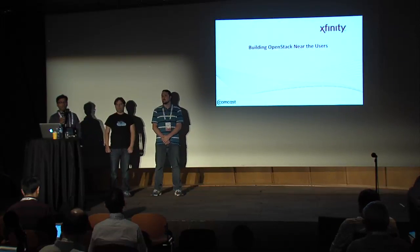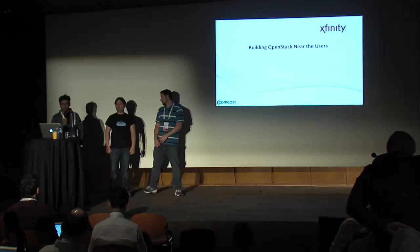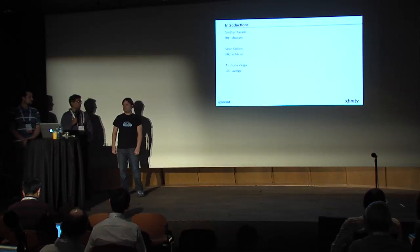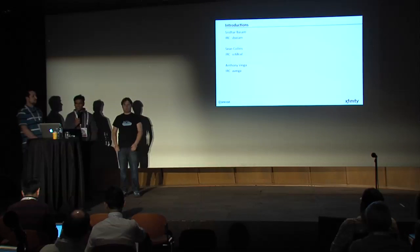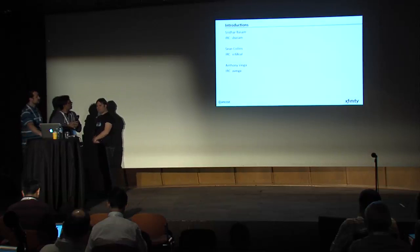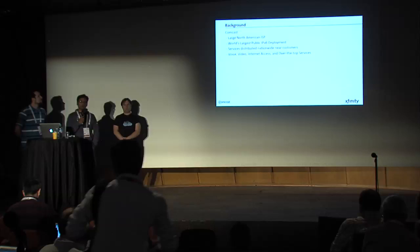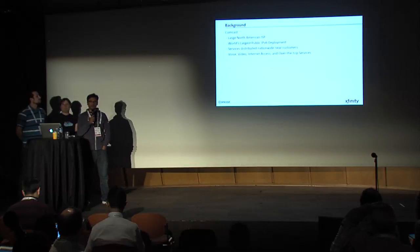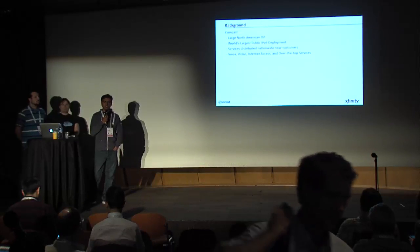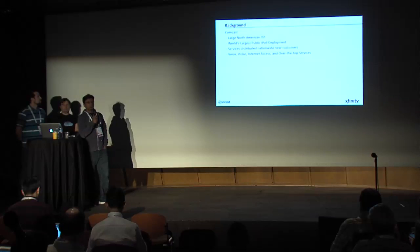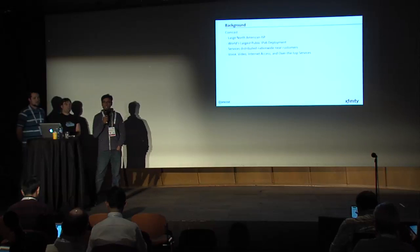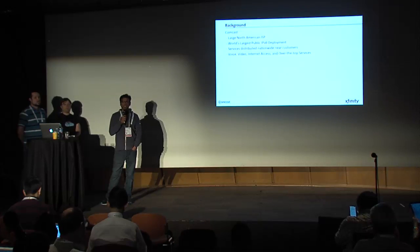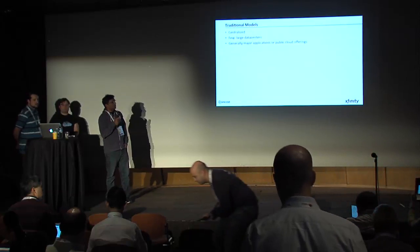My name is Sridhar Basim and we're going to be talking about building OpenStack near the users. I'm a lead engineer with Comcast. This is Anthony Vega, our network engineer at Comcast, and Sean Collins, our lead Neutron developer at Comcast. A little bit of background: Comcast is a very large ISP and service provider in North America. We do internet service, video, telephony, and over-the-top services for millions of customers. We have the world's largest IPv6 deployment.